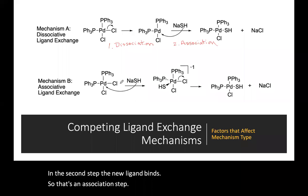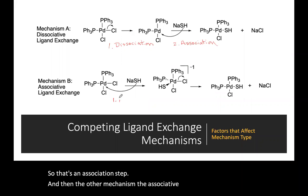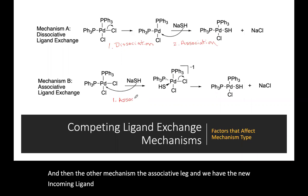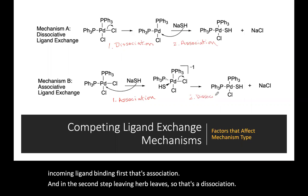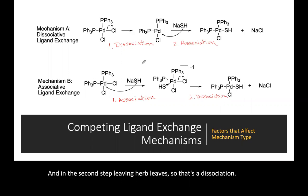In the other mechanism, associative ligand exchange, the new incoming ligand binds first — that's an association — and in the second step the leaving group leaves, which is a dissociation. Same products, same types of steps, just a different order.